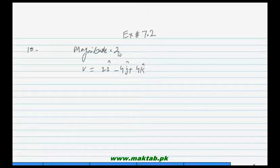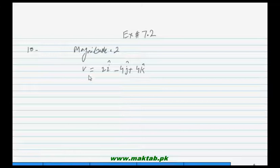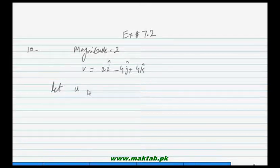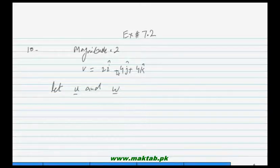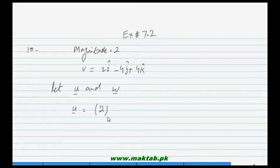We need to find two vectors which have length two and direction parallel to vector v. Let u and w be the vectors that we need to find. The magnitude of u is equal to 2.